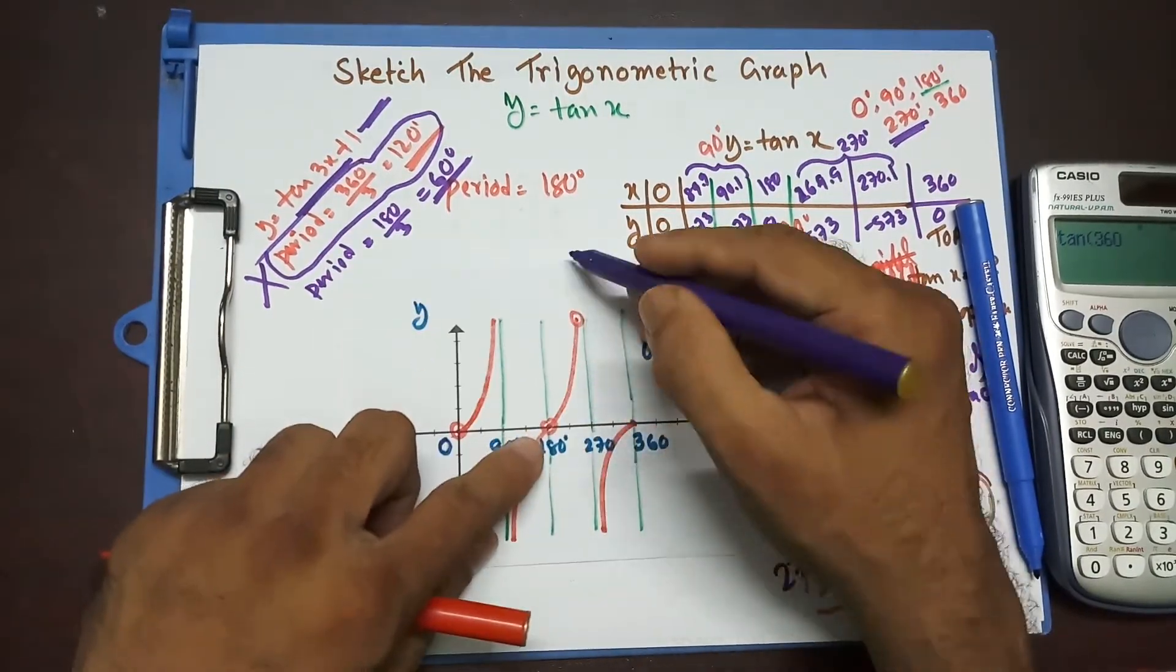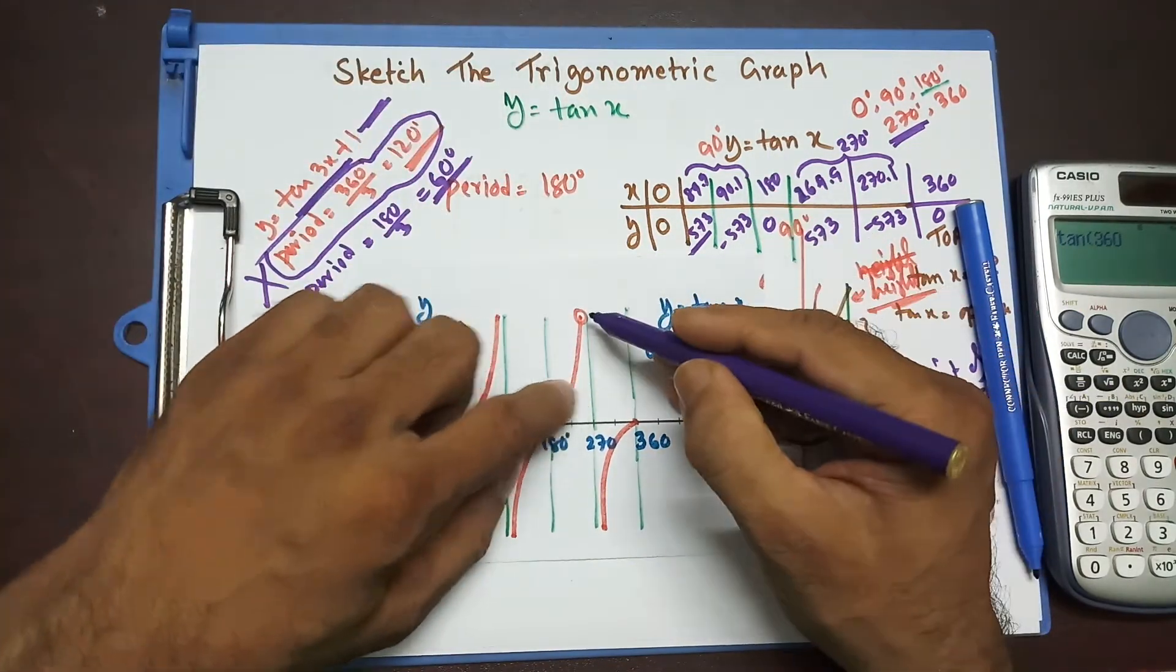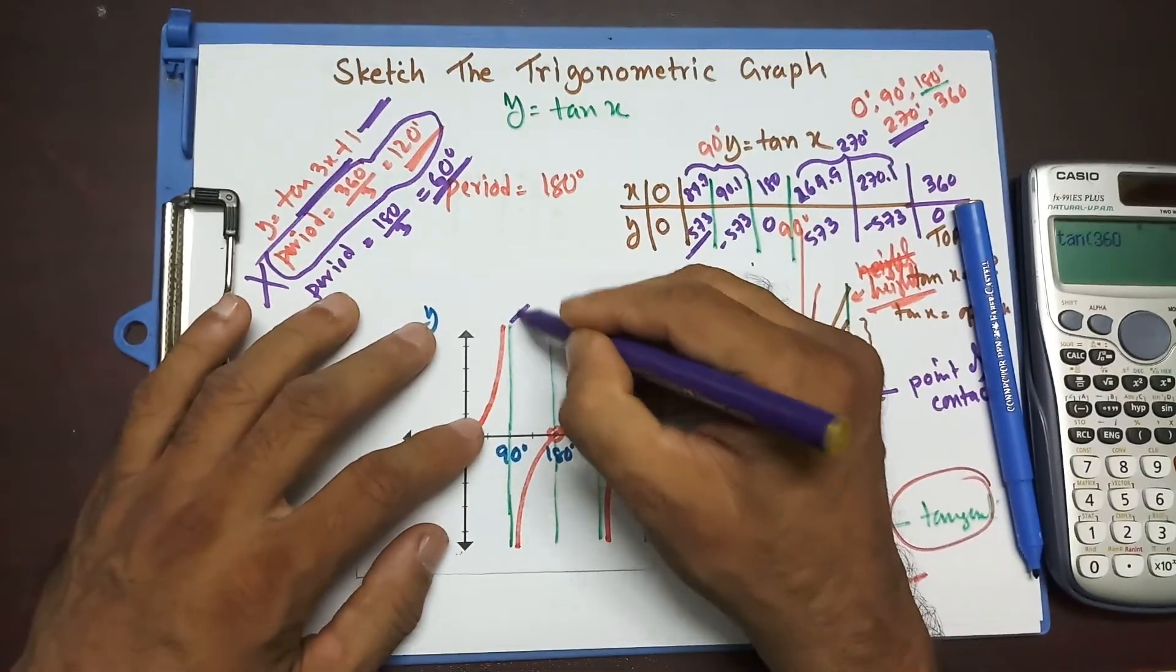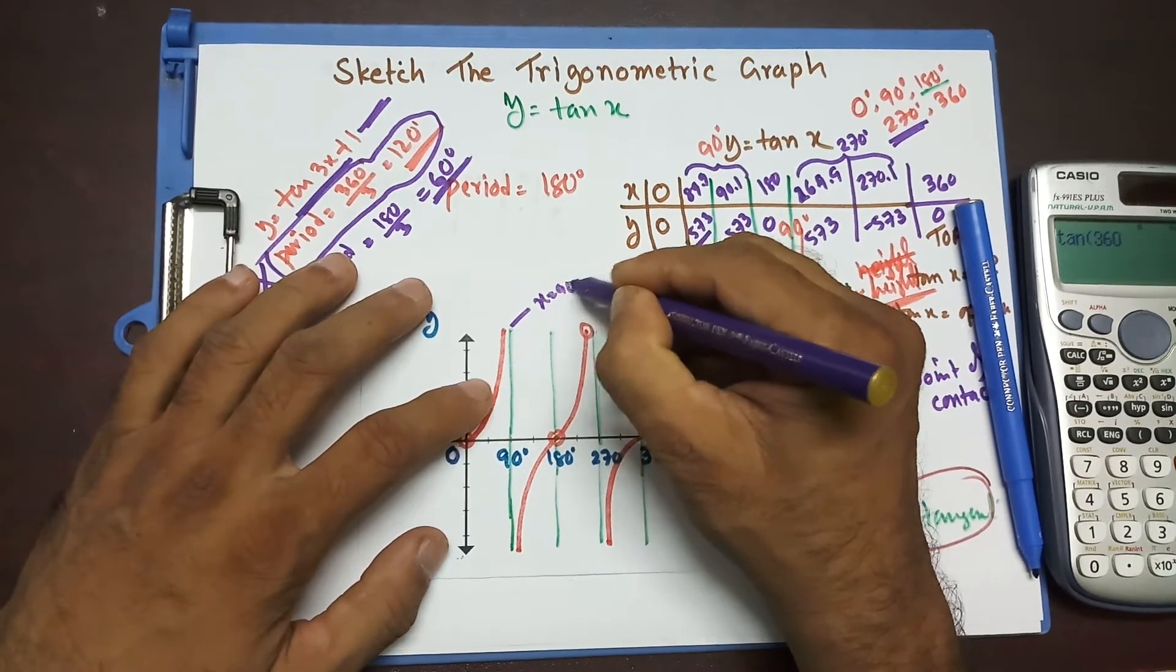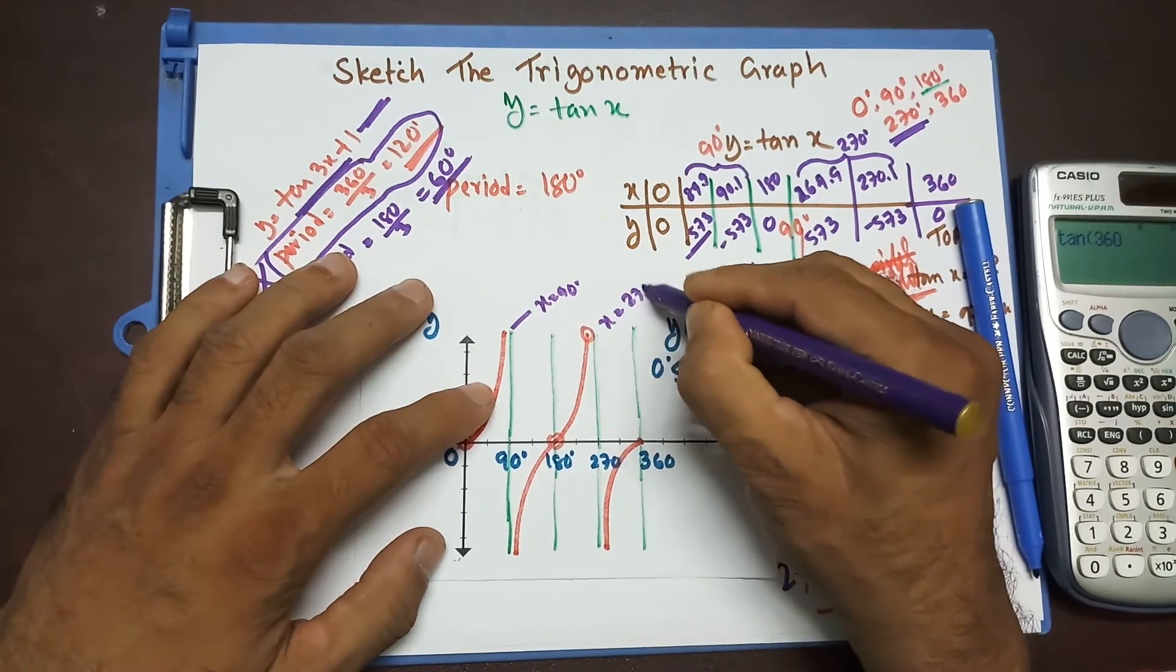Now, it doesn't have any regular amplitude like sine and cos theta because it's going up, up, up, but it will never intersect this line. Now, this tan, this graph, this line over here, vertical line, 90 degree, x equal to 90 degree. And this one, x equal to 270 degree. These two lines are known as asymptote. They're known as asymptote.